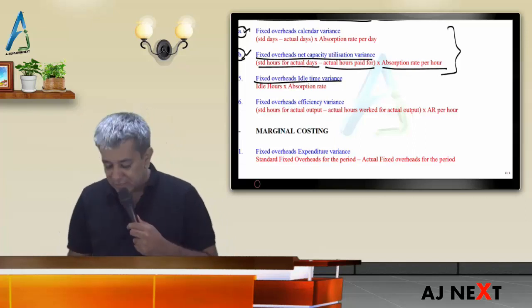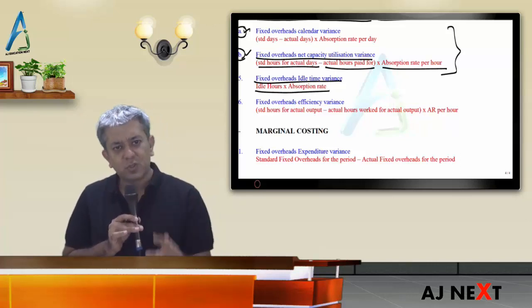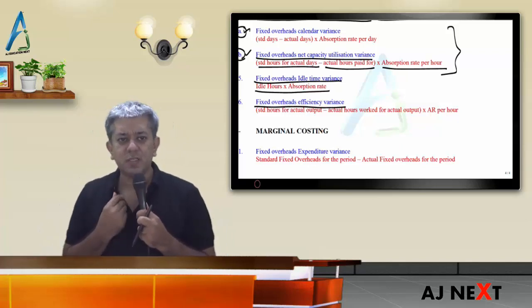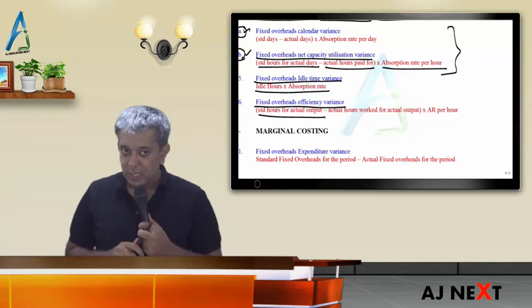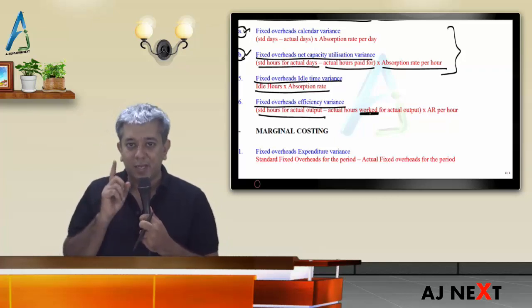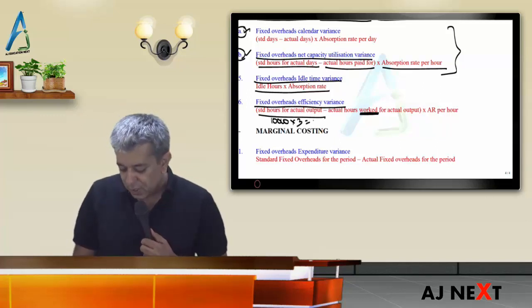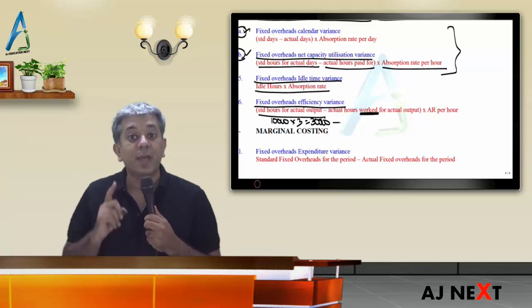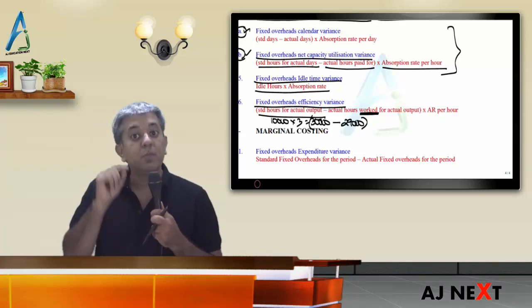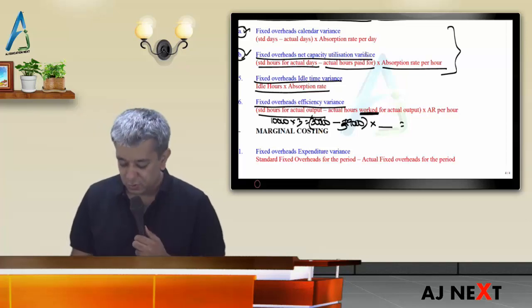Fifth: FOH idle time variance. This is the simplest variance. Actual idle hours (since standard idle hours are always zero) multiplied by absorption rate per hour gives the answer. Sixth: FOH efficiency variance. For actual output, how many hours should have been taken versus how many hours were actually worked. For example, actual output 10,000 units, each requiring 3 hours — 30,000 hours should have been taken. If only 29,000 hours were worked, workers completed faster — variance is favorable. Multiply the hour difference by absorption rate per hour.